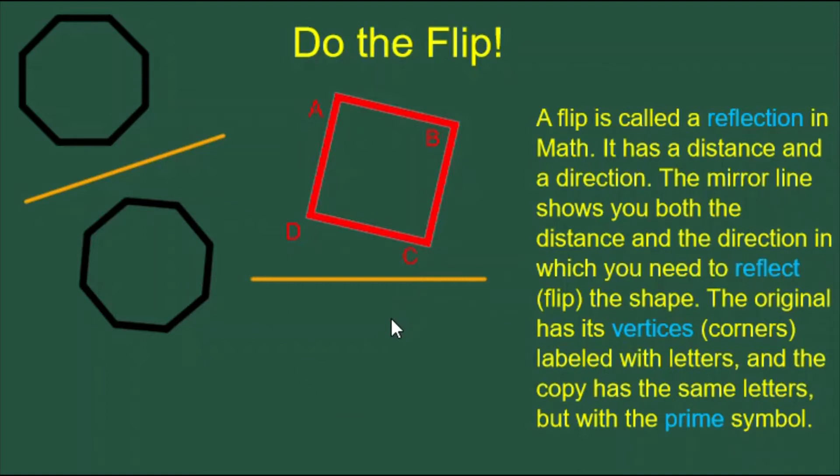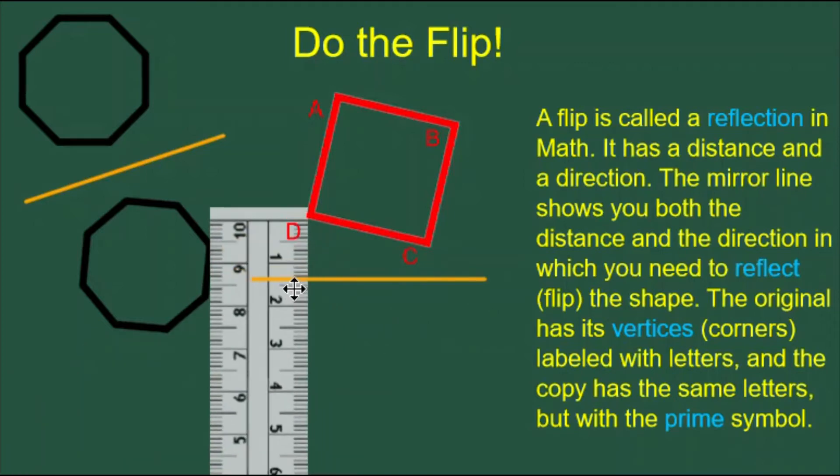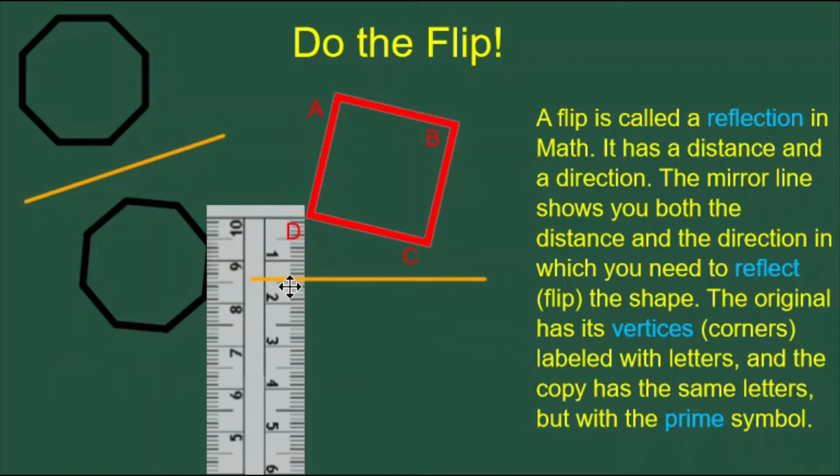To reflect this square across the mirror line, what I want to do is take a ruler and measure the distance from one of the vertices to the mirror line. I make sure the edge of the ruler is perpendicular to the mirror line. Then I double that distance.